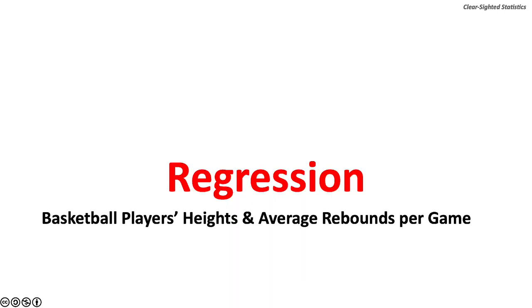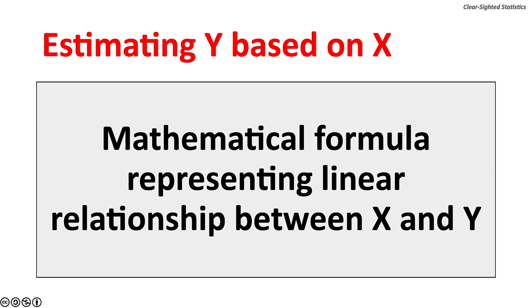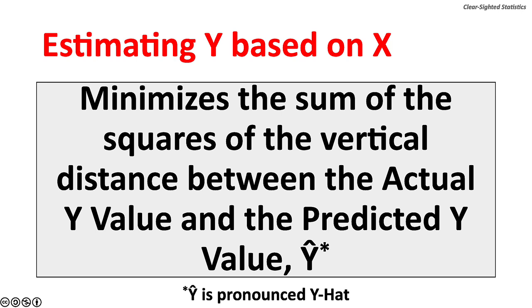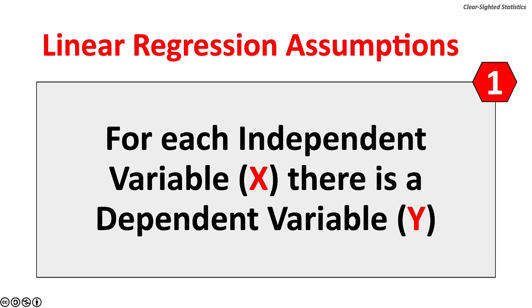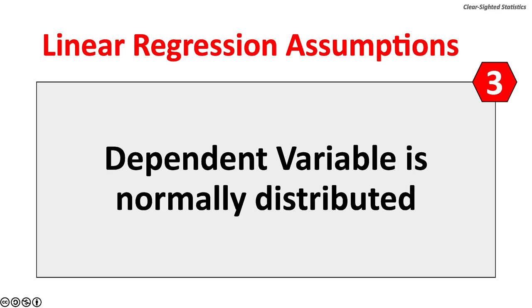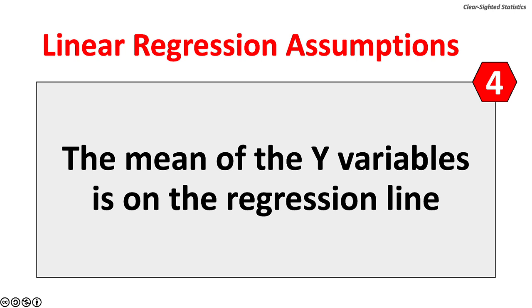Now let's turn to regression using the basketball players' heights and average rebounds per game. The regression model is a mathematical formula representing the linear relationship between X and Y, used to estimate the value of Y based on X. Regression is based on the least squares line, which minimizes the sum of the squares of the vertical distance between the actual Y value and the predicted Y value, or Y-hat. Linear regression models how well the independent variable X predicts the dependent variable Y.